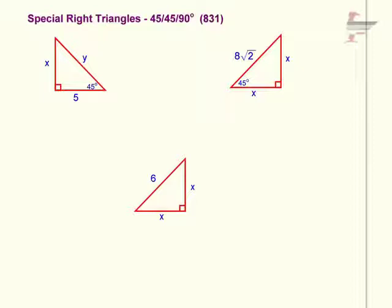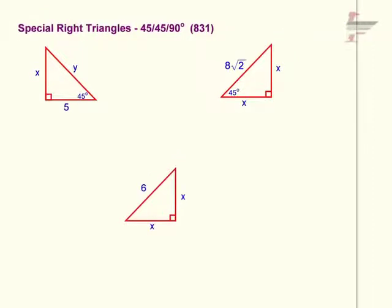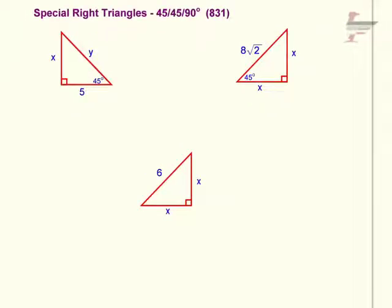Welcome geometry students to special right triangles examples. These three examples are for 45, 45, 90 degree triangles and our shortcut and rule we need to remember and memorize is that the two legs are always going to be the same and we're going to label those X and X.